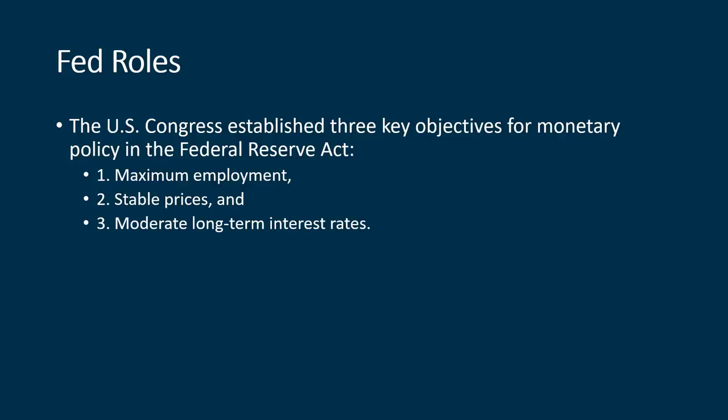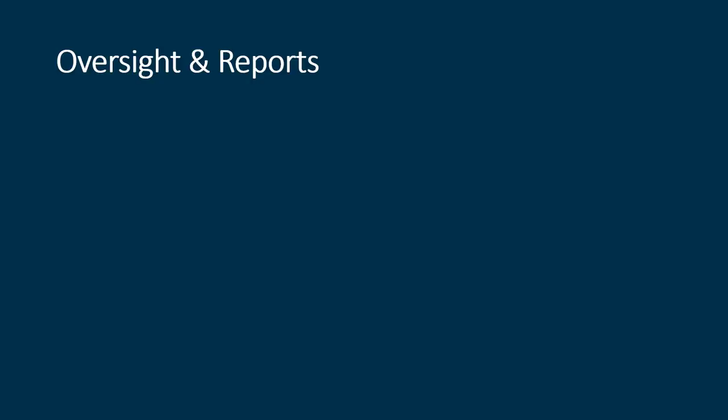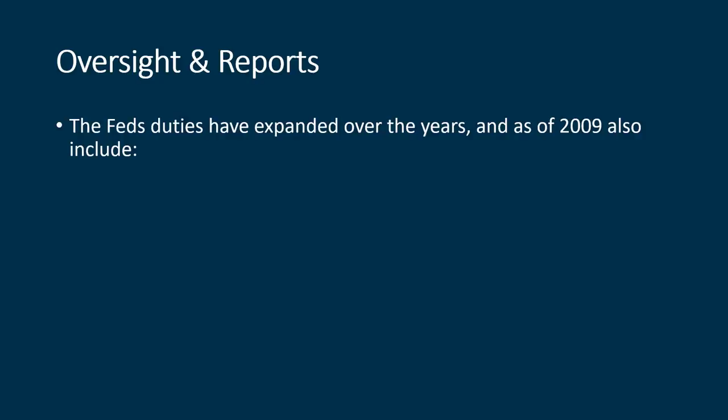The third objective is to moderate long-term interest rates. They don't actually do this directly — what they do is adjust short-term overnight lending rates. They come together and signal a range, such as between 1% and 2%, and as long as banks are within that range, they're satisfied. This is the role that probably gets them the most attention. They're also to provide oversight and reports, and a lot of the data I'll show you later came directly from the Federal Reserve. The Fed's duties have expanded over the years.